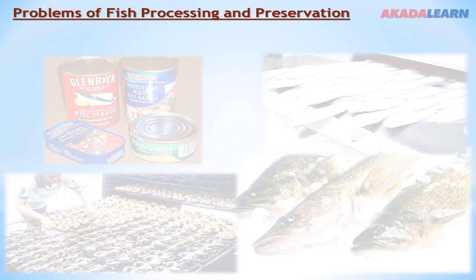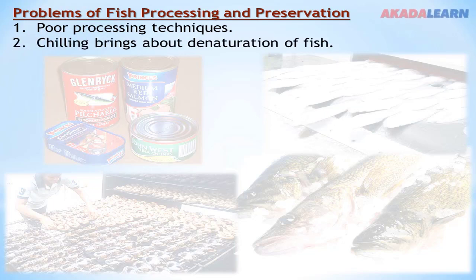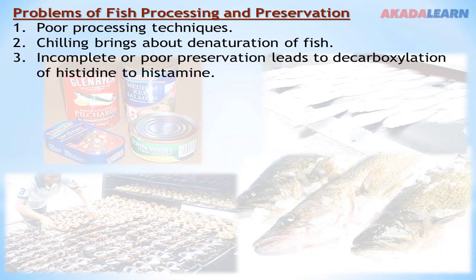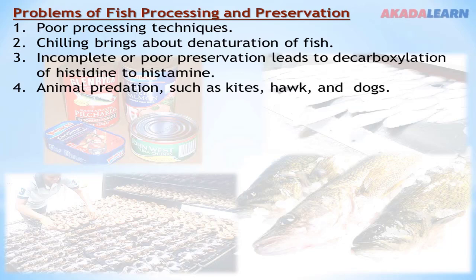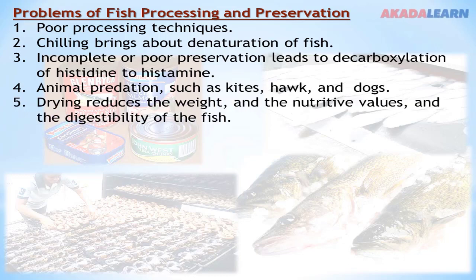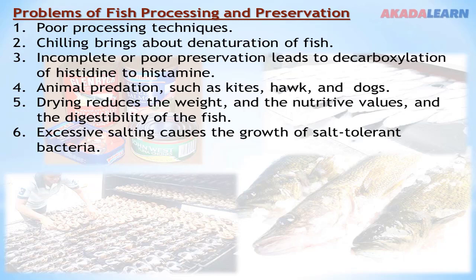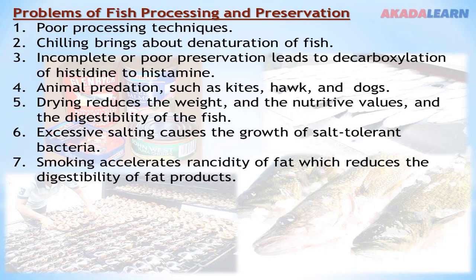Problems of fish processing and preservation: poor processing techniques. Chilling brings about the naturalization of fish. Incomplete or poor preservation leads to decarbonization of histidine and histamine. Animal predation, such as by kites, hawks, and dogs, can be a threat to fish processing and preservation. Drying reduces the weight, nutritive values, and digestibility of fish. Excessive salting causes the growth of salt-tolerant bacteria. Smoking accelerates rancidity of fat, which reduces the digestibility of fat products.